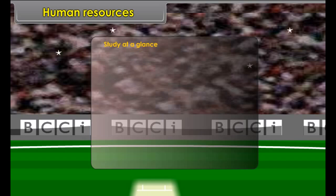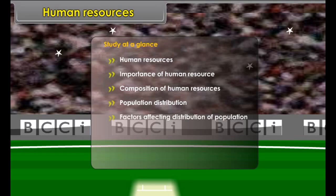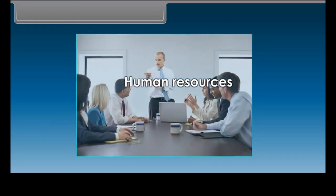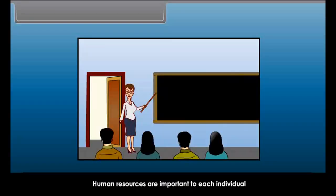Study at a glance: Human Resource, Importance of Human Resource, Composition of Human Resources, Population Distribution, Factors Affecting Distribution of Population, Spatial Distribution of Population, Density of Population, and Population Change. Human Resource is a term which describes the combination of traditionally administrative personnel functions with performance management, employee relations and resource planning.